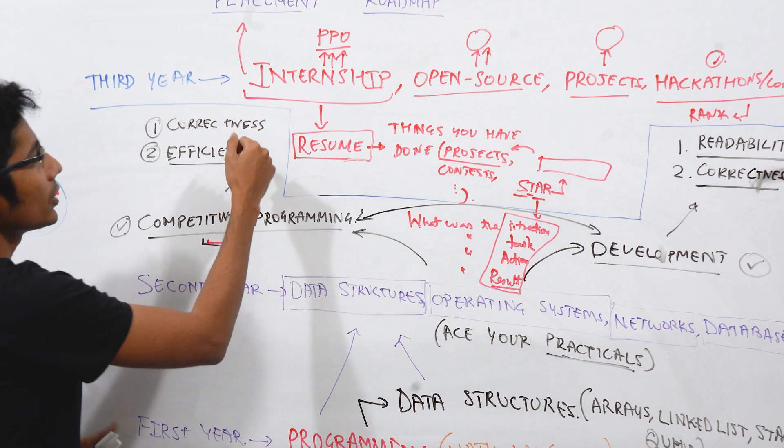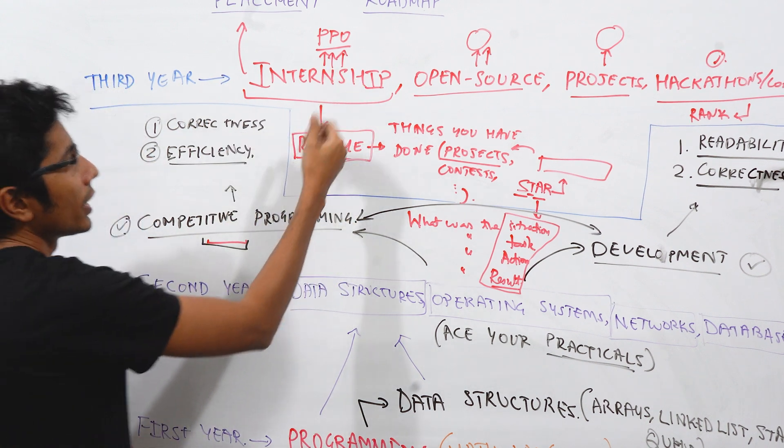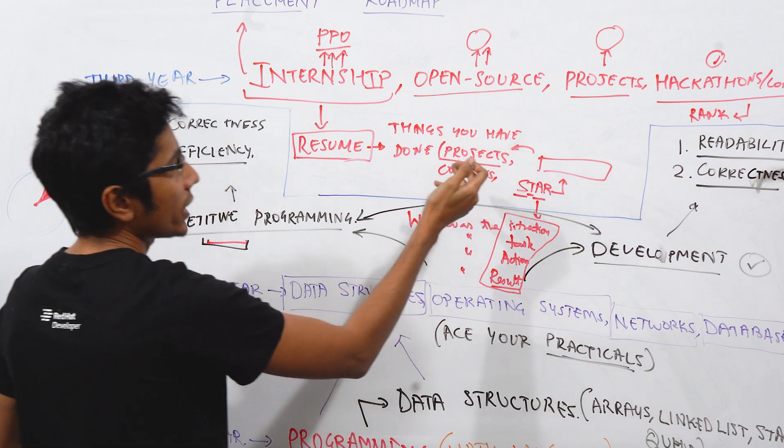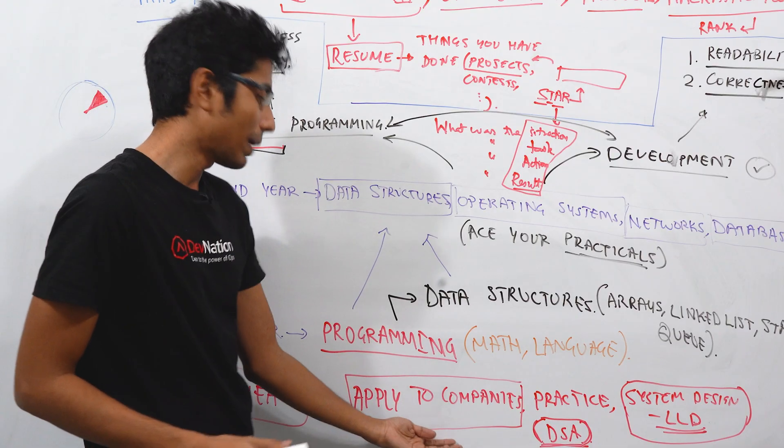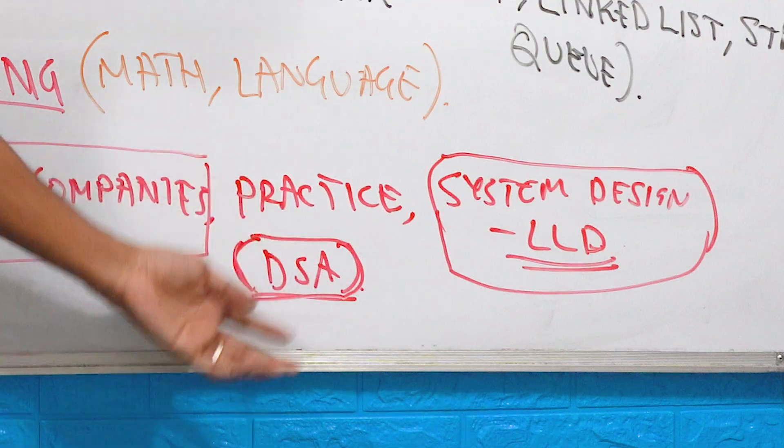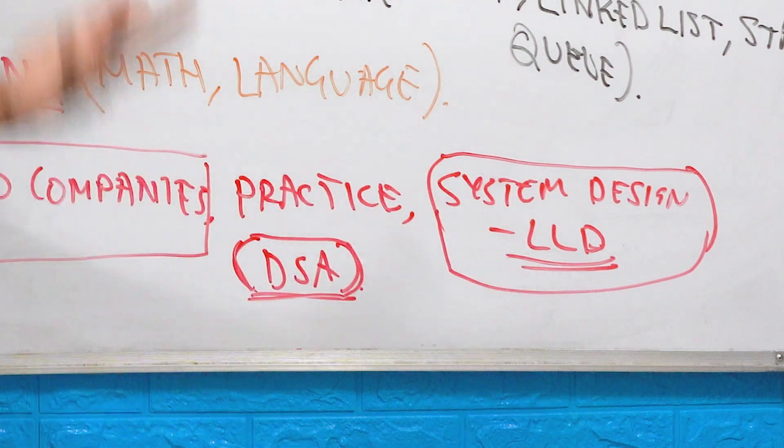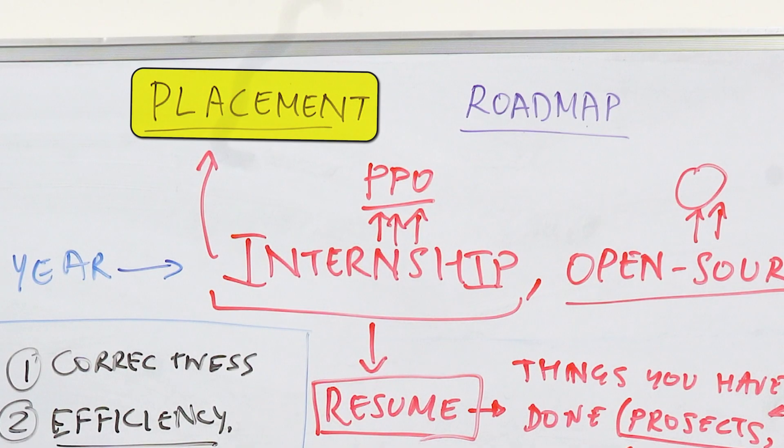And finally, in your third year, try to secure a placement of internship. If that's not the case, then you go for open source projects. If that doesn't work out, apply to all the companies, practice your DSA and your low level design skills. You'll be fine. Things will go well. You're going to get placed. So I believe that this is a comprehensive roadmap when it comes to preparing for placements throughout your college duration.